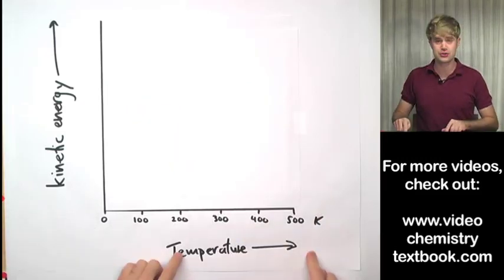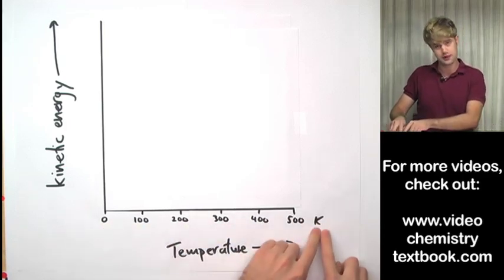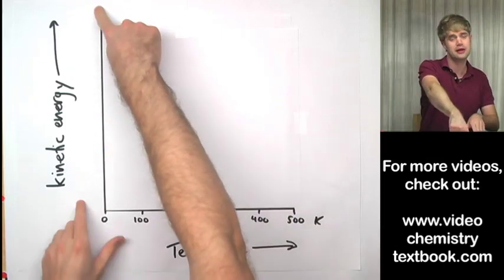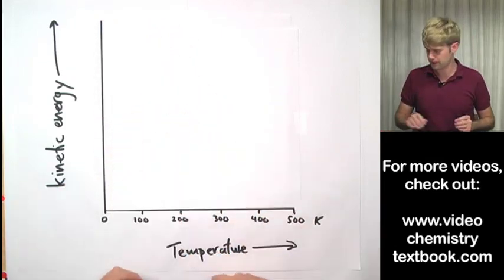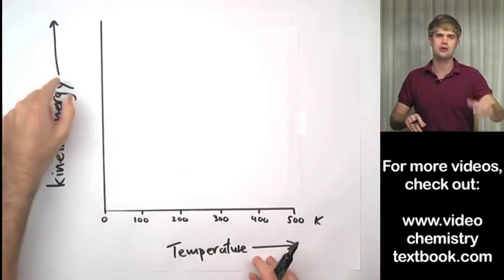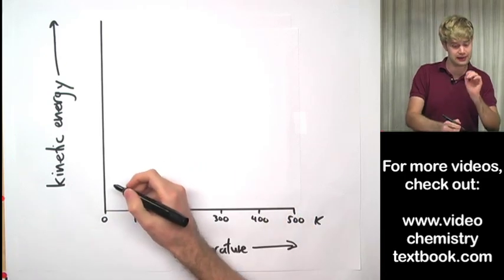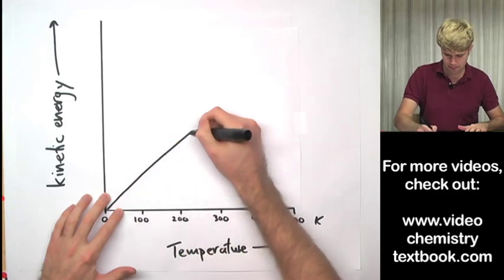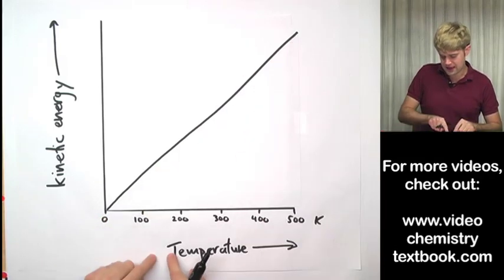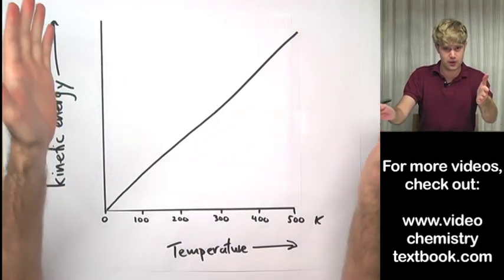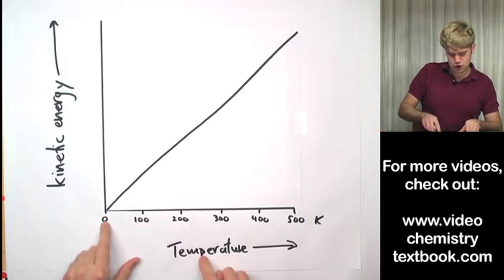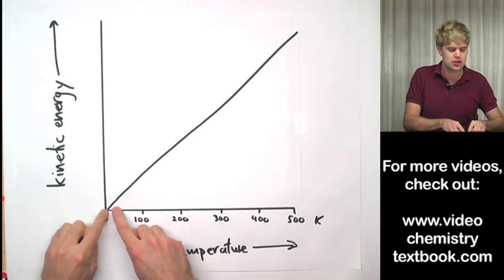Here we have a graph. On the bottom is temperature in Kelvin — it goes from 0 to 500, increasing in this direction. On this axis is kinetic energy: the speed the gas particles in a sample of gas are moving. The higher we go up here in kinetic energy, the faster our gas particles are moving. For a sample of gas, like gas in a balloon, let's look at the relationship between temperature and kinetic energy. When we increase the temperature of this gas sample, we get a line. The most important thing is where this line begins: at a temperature of 0 Kelvin, particles of gas have 0 kinetic energy.